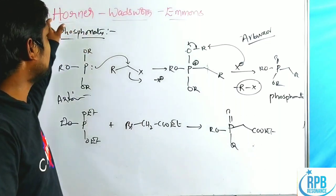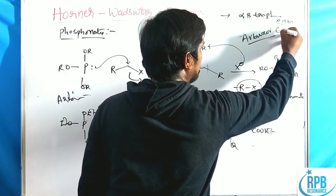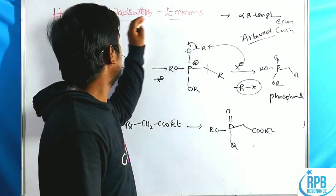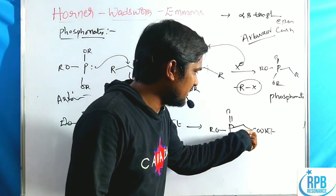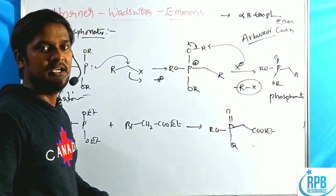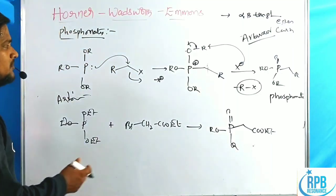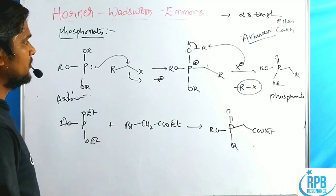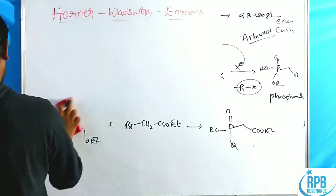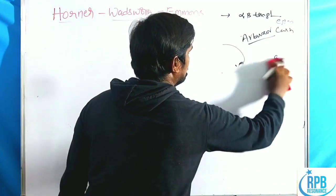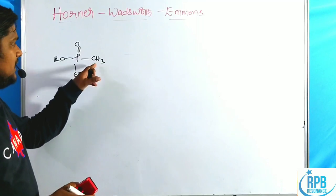The main advantage of the HWE reaction is the preparation of alpha-beta unsaturated carbonyl compounds, esters, or acid derivatives. For alpha-keto phosphonates, the Michaelis-Arbuzov reaction cannot prepare alpha-beta phosphonates, so an alternative method is used to prepare alpha-keto phosphonates.